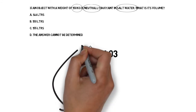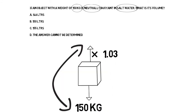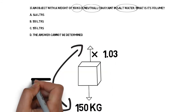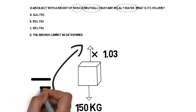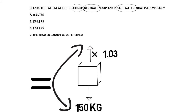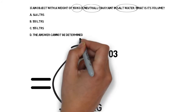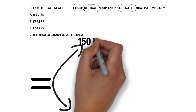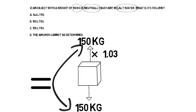The object is neutral. That means the downward force and the upward force are equal. So if the downward force — the weight — is 150 kilograms, the upward force must also be 150 kilograms.